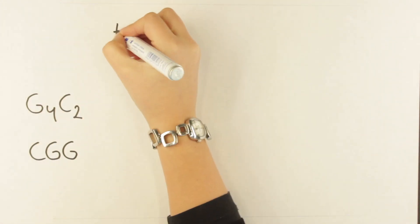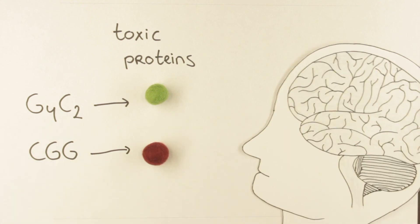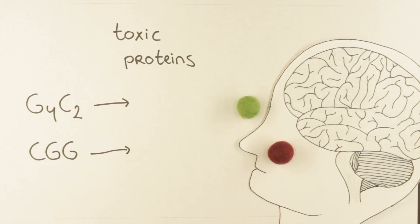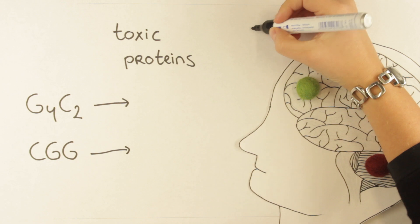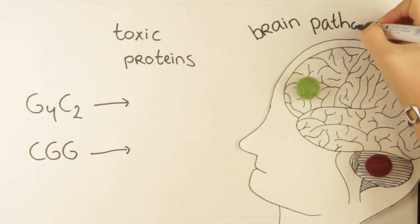So if we take these repeats, both repeats are translated into different toxic proteins. These proteins accumulate in the brain and result in a specific brain pathology characterized by inclusions in neurons.